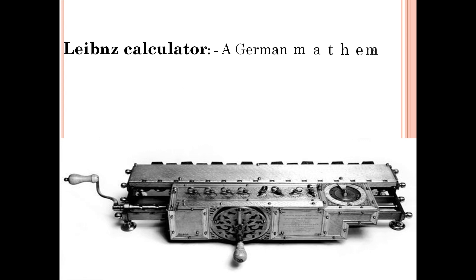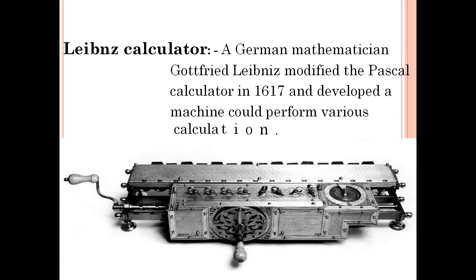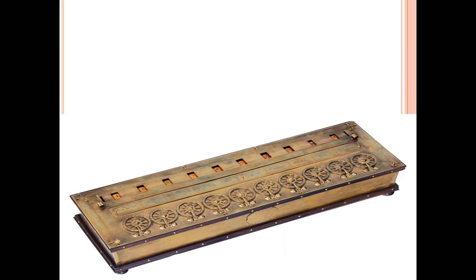The Leibniz calculator was invented by German mathematician Gottfried Leibniz, who modified Pascal's calculator in 1694 and developed a machine that could perform various calculations — many different mathematical operations. This calculator was a modification of Pascal's calculator.